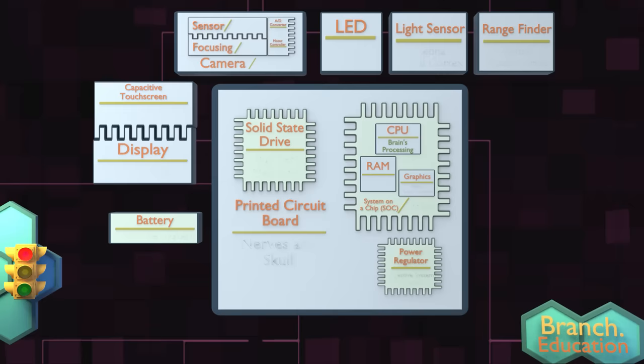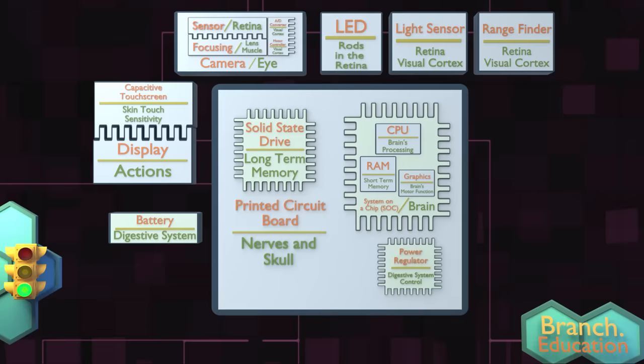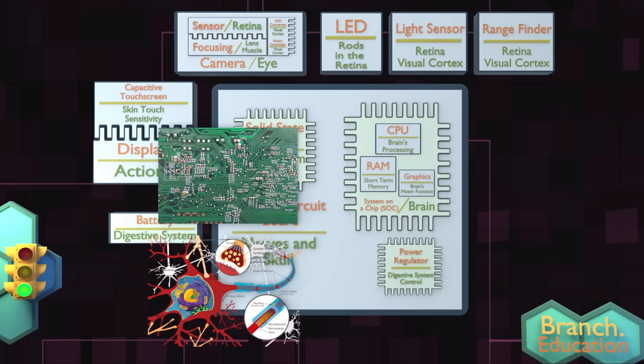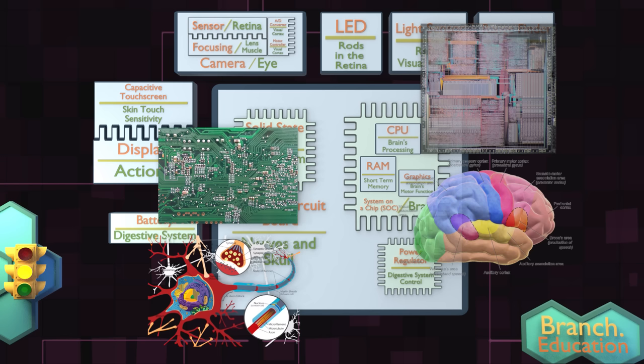These are some of the comparisons that we came up with. It's interesting to find so many commonalities between two things that are so very different. Like, nerves and signal wires both transmit high-speed signals to different areas of the body and smartphone via electrical pulses, yet one is made of copper, while the other is made of cells. Also, the human mind has similar levels of memory to that of the CPU, RAM, and solid-state drive. What do you all think?